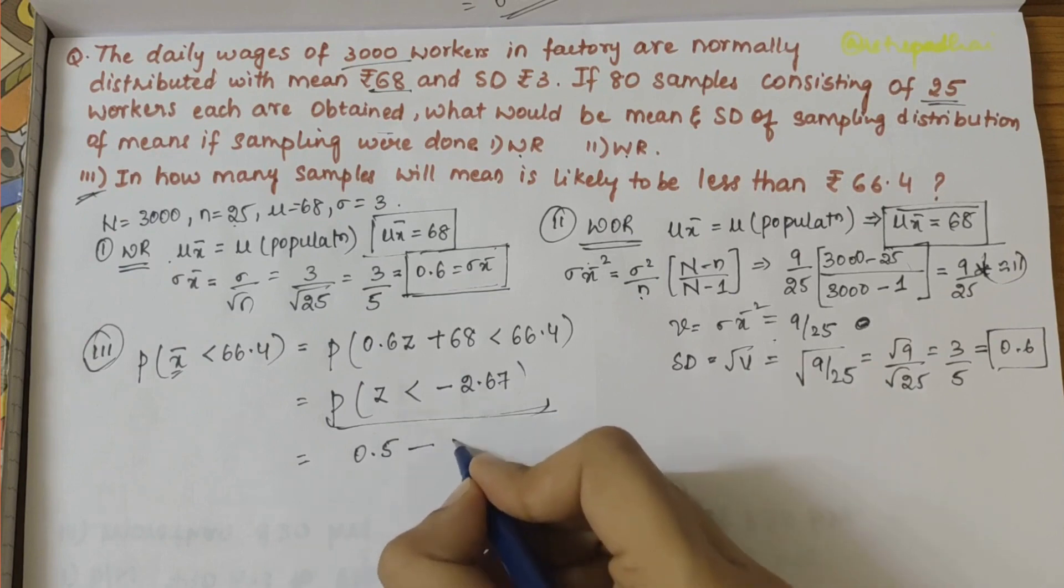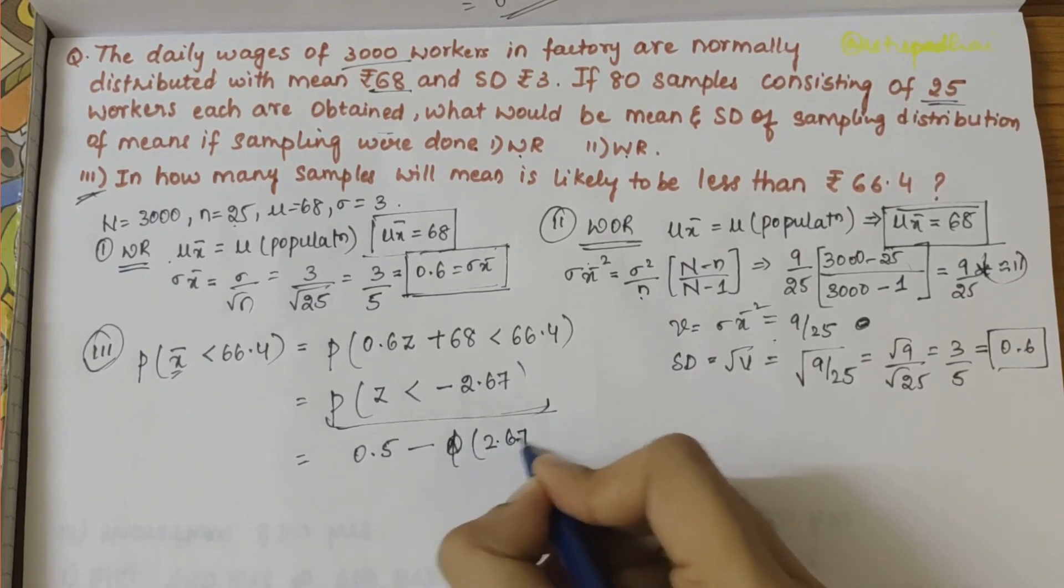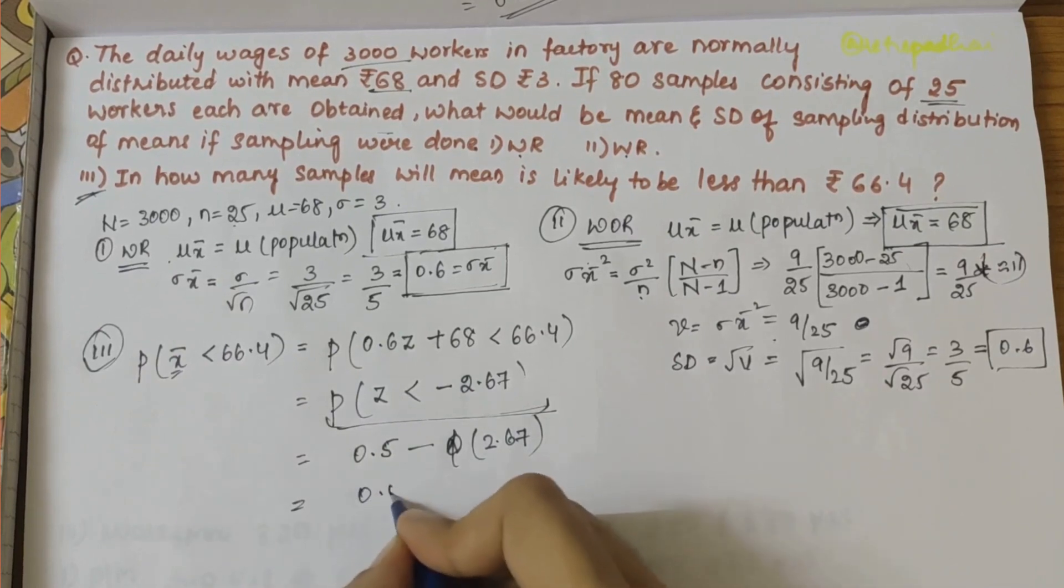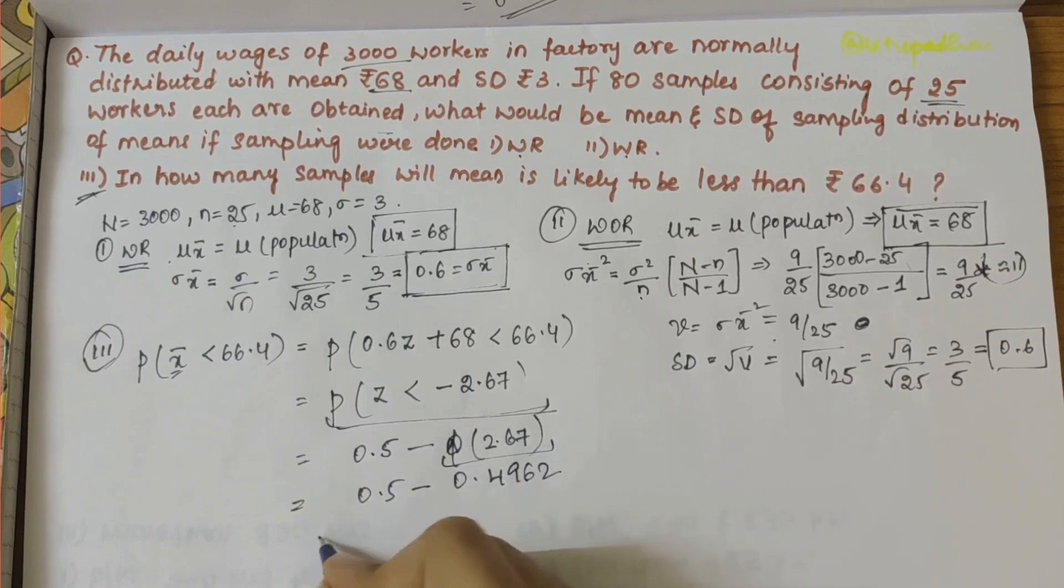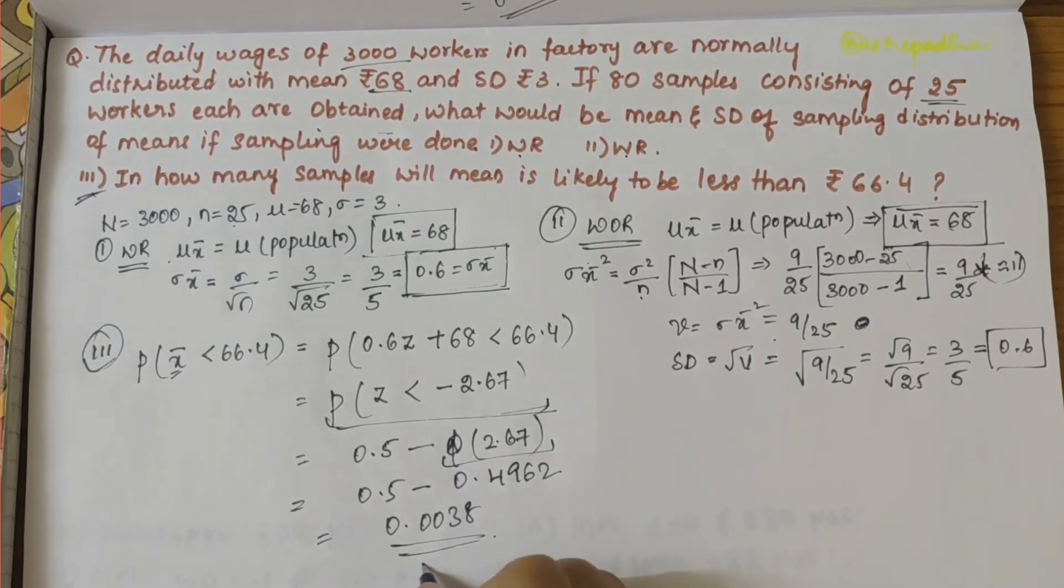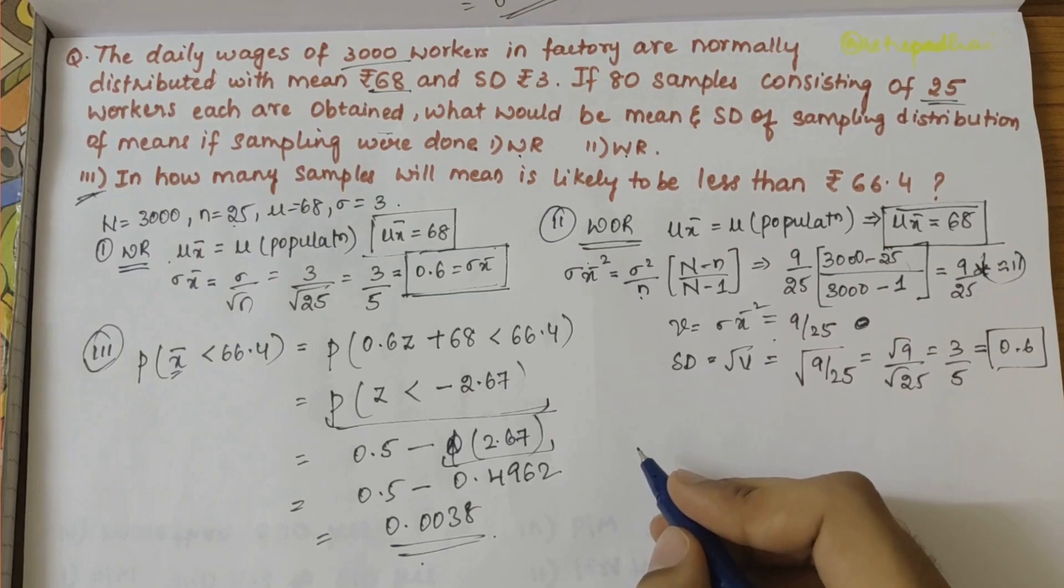We can write it as 0.5 - Φ(2.67). 0.5 - 0.4962, further solving, equals 0.0038. So this is the value which we have found.